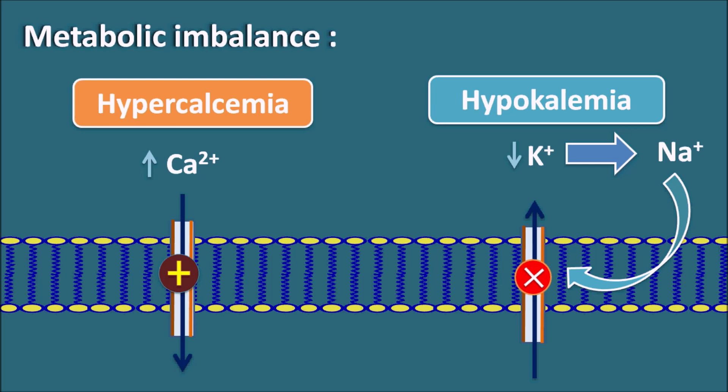Generally, we can observe hypercalcemia and hypokalemia with few diuretics like the loop diuretics. So when loop diuretics are used at a high dose, they can produce severe hypercalcemia and hypokalemia, which may produce some cardiotoxicity by increasing the QT interval.